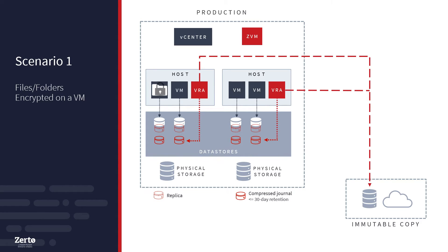Scenario 1 covers a small-scale infection, using the same process administrators use on a regular basis to restore files from accidental deletion or corruption. Zerto can mount a recovery volume using any journal checkpoint, then restore files and folders directly back to their source location. Ultimately, the files can be downloaded to a clean room for further analysis and inspection before being placed back into production.